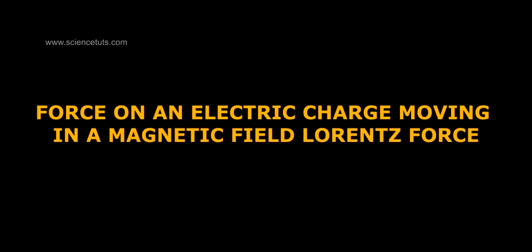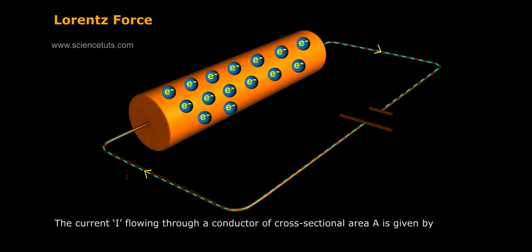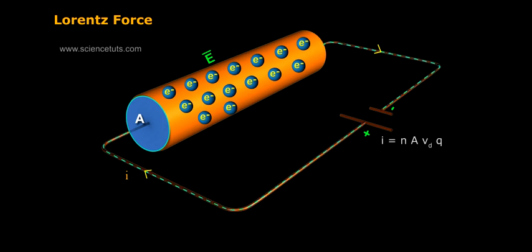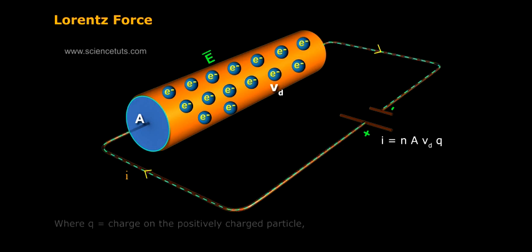Force on an electric charge moving in a magnetic field: Lorentz force. The current I flowing through a conductor of cross-sectional area A is given by I equals n A v q, where q stands for charge on the positively charged particle.